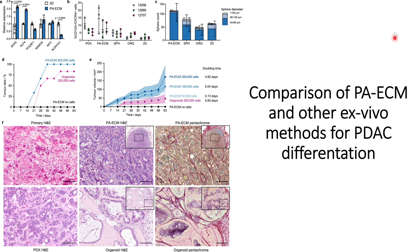They also checked pentachrome staining. In PAECM, collagen — marked by red — is expressed in the cancer cells. In the organoid pentachrome staining, most of the collagen is found in the stromal region. Glycans, shown in white, are also present in the organoid but not in cells cultured with PAECM. This pentachrome staining pattern in PAECM is similar to pancreatic cancer tissues observed in humans.